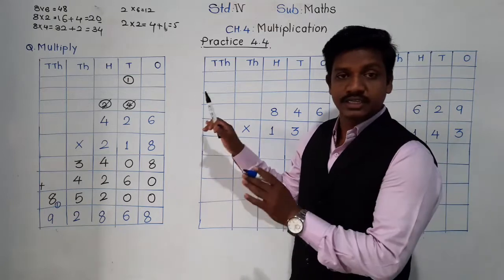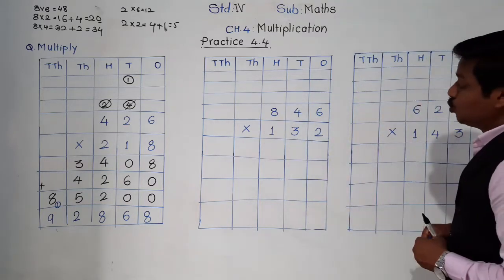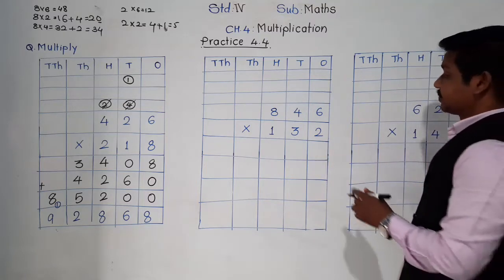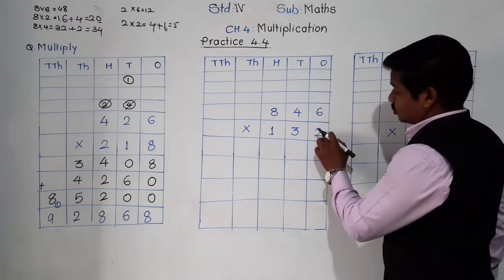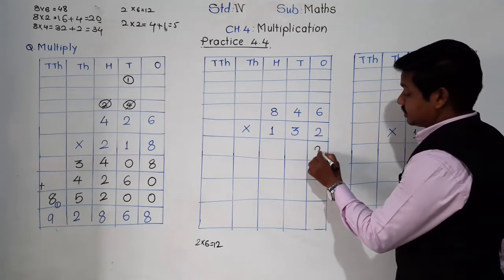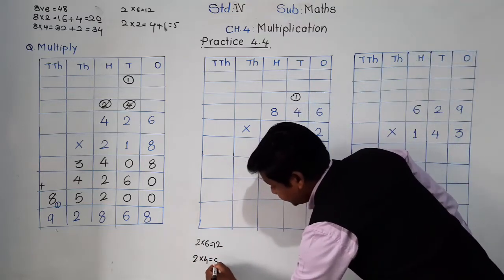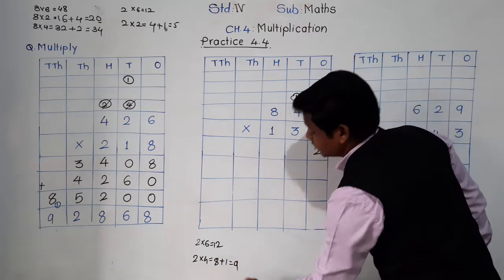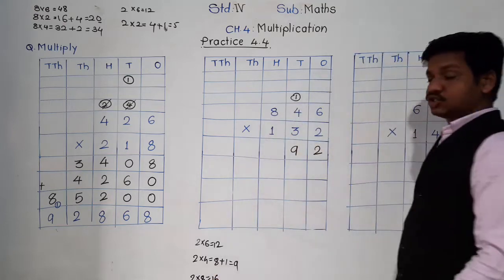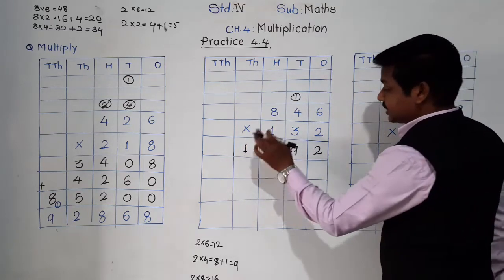The procedure is the same — just one digit is increased so one step is increased. Let's solve the second example: 846 multiplied by 132. First we are going to multiply by the ones place digit, that is 2. 2 sixes are 12: 2 comes down, carry 1. Then 2 fours are 8 plus carry 1 is 9, no carry. 2 eights are 16; we write 16 as it is since there is no more digit.